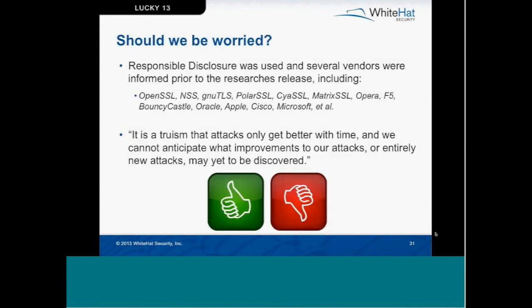Is there cause for concern? Well, yes and no. No in the sense that when this was discovered, the researchers obviously contacted vendors and let them know about the flaw so that it could be remediated prior to the research being released. However, they also warn that attacks only get better with time and we cannot anticipate what improvements to existing attacks or entirely new attacks may yet be discovered. So if something like this or the RC4 weakness was expanded upon, we would absolutely have something to worry about because of TLS's widespread use and the faith that we place in it. It's great that this was discovered and fixed, yet we should absolutely be cautious about any improvements to this attack that may move it out of the theoretical realm and into being actively exploited.